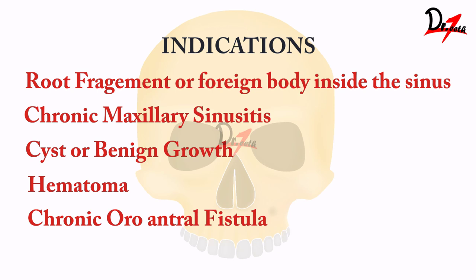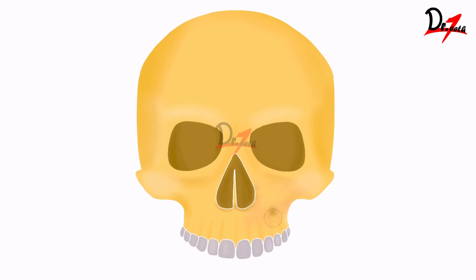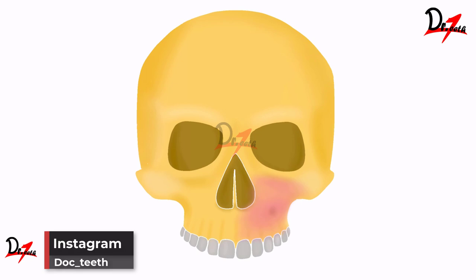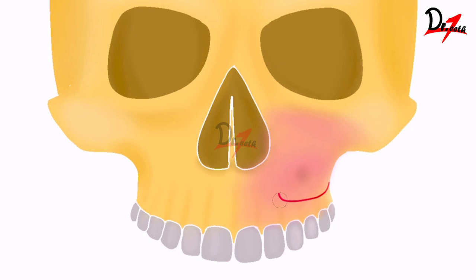Moving on to the surgical part — we can either perform this procedure under local anesthesia with sedation, but general anesthesia is the preferred method. We are going to give a semi-lunar incision in the buccal vestibule, starting from the canine all the way to the second molar, semi-lunar in shape.